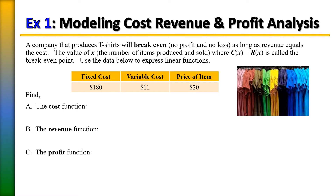Let's use the data below to express a linear function. With the data we're given, we have the fixed cost, which represents expenses that are the same no matter how many t-shirts we sell — costs such as rental costs, taxes, or equipment rental fees that stay the same regardless of how many t-shirts we sell. Next, we have variable costs, which are expenses that change with the number of items produced, based on things like materials.